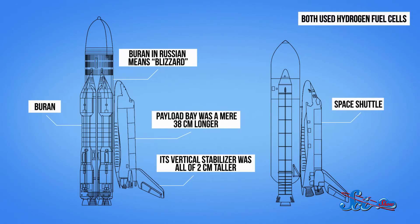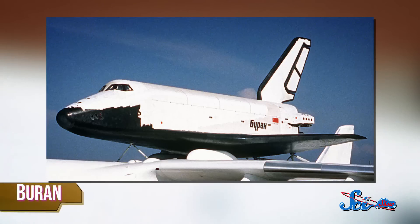Plus, both used hydrogen fuel cells to produce electricity, and hydrazine, a propellant, to power the hydraulic systems. With all these similarities, it is easy to look at these photos and call the Buran a carbon copy of the Space Shuttle. And yes, there are rumors that KGB spies had gotten the shuttle's blueprints for their engineers.